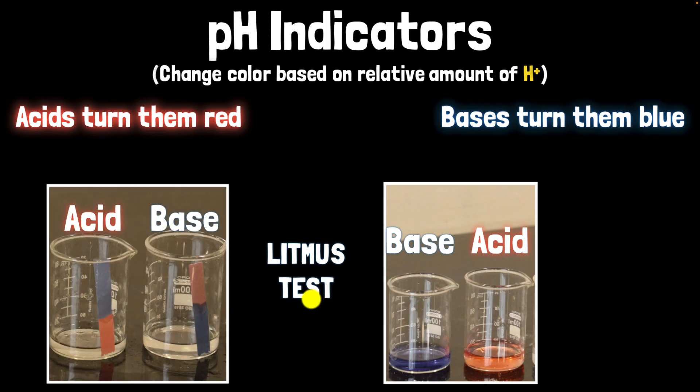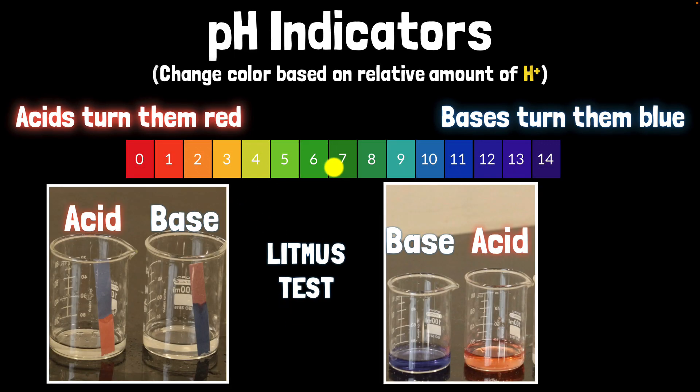These are more complex than a litmus paper because they are composed of many human-made components that each change color over a specific pH range. So there will be a lot more color changes. And based on the colors, we can not only tell whether they're acidic or basic, but we can also tell how acidic or how basic they are.